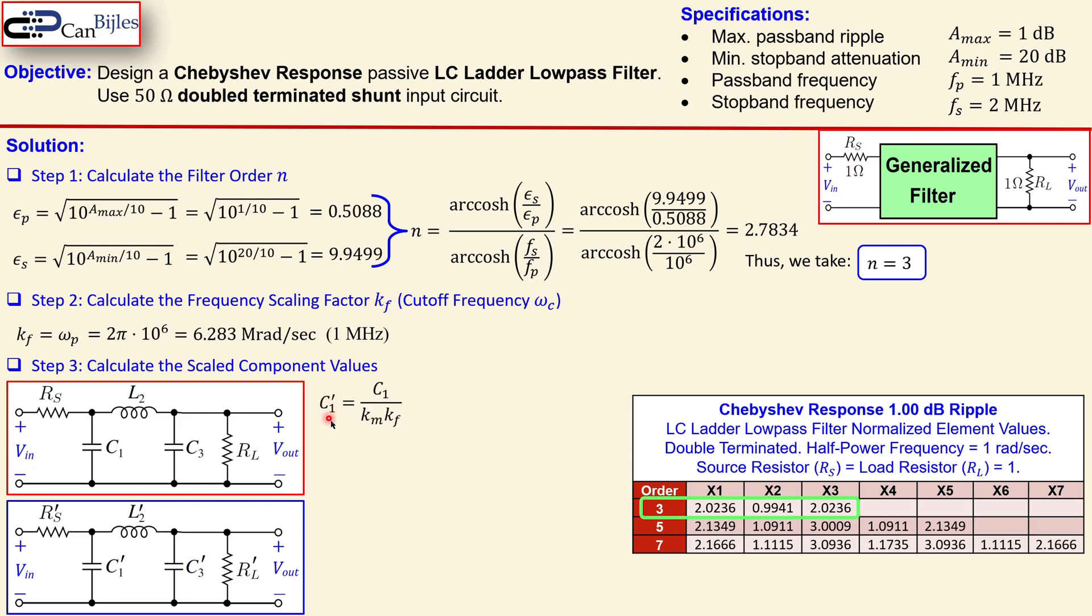C1 prime is equal to C1 given here over the Km and Kf. Now Km is 50 because we need to go from 1 ohm to 50 ohm. So that means we need to use the magnitude scaling factor of 50. Kf itself is this 2 pi times 10 to power 6 as the frequency scaling factor and this C1 is again this value. So we now substitute everything here and you get now 6.441 nF.